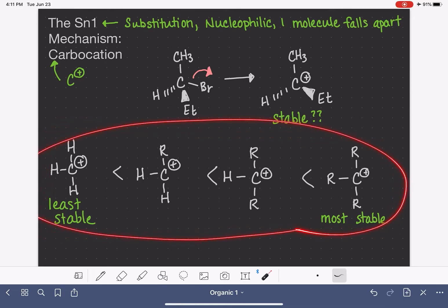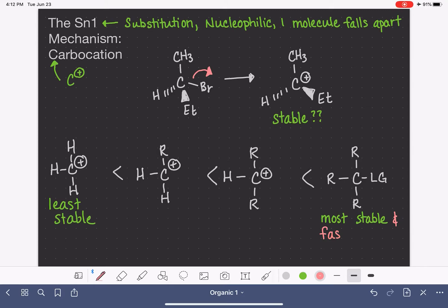We can use that to make some generalizations about the ease at which the different molecules can undergo the first step of the reaction forming that carbocation. Since the tertiary is the most stable out of all of the carbocations, then a molecule that has a leaving group on the carbon atom with no hydrogens on it at all, because it forms the most stable intermediate, this will be the fastest to react by the SN1 mechanism.